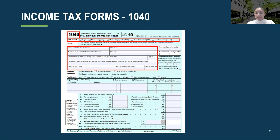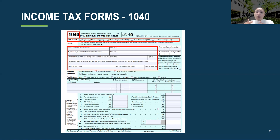Other reasons the IRS DRT will not link include identity theft — if your parents have gone through identity theft it will not link. If you have switched addresses, that will also prevent linking due to not having an updated mailing address in the IRS system. If your parents owe a balance to the IRS and have not paid it, it will not link. Sometimes there are unexplained linking issues as well.